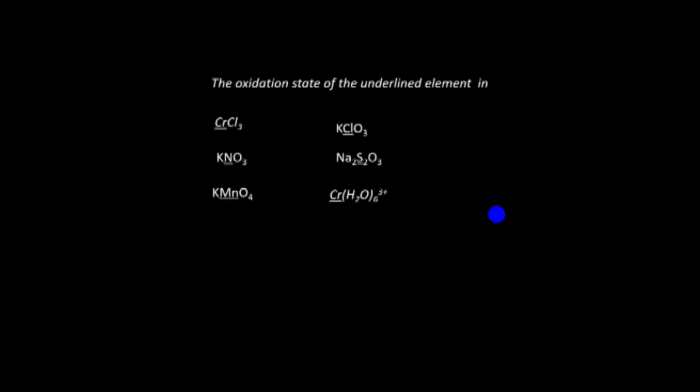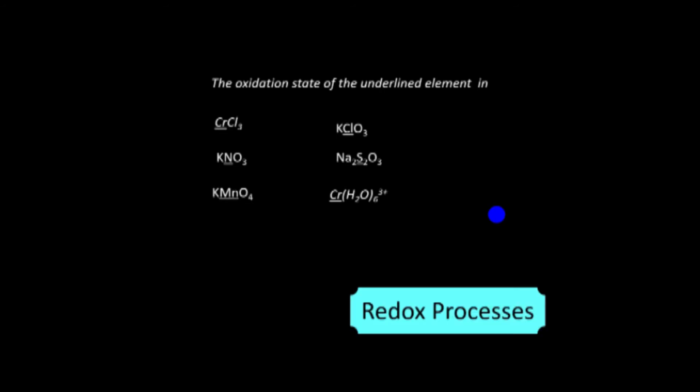For a chromium complex compound, water is a neutral molecule so it contributes zero. Chromium is x, and x plus zero multiplied by six equals plus three (the charge of the complex ion). So chromium equals plus three. Now we move on to redox processes, using the concept of oxidation number to identify oxidation and reduction in terms of electron transfer.